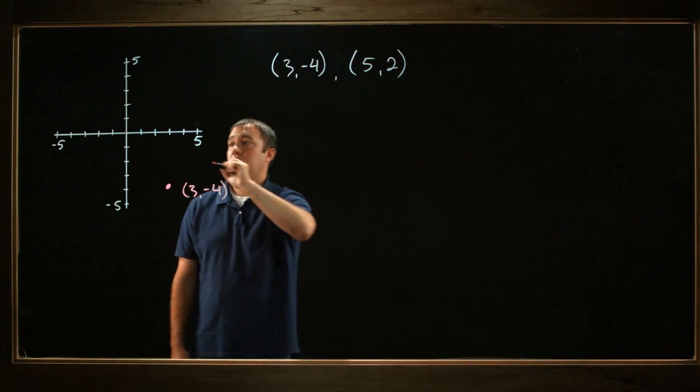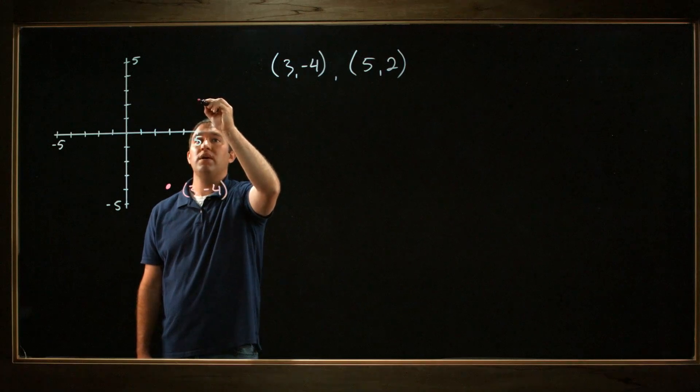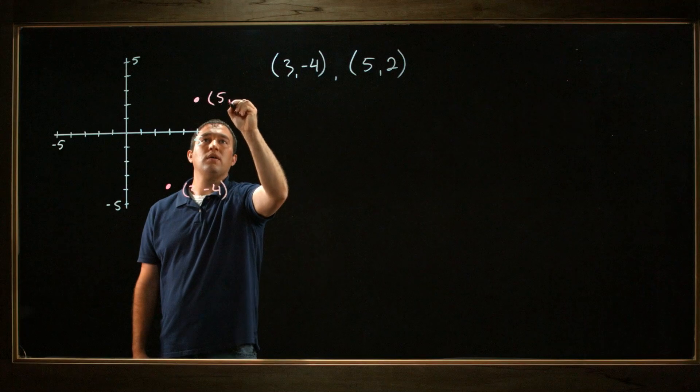Let's plot the point (5, 2). I go 5 over in the x direction and 2 up in the y direction, and I have this point right here. That's the point (5, 2).